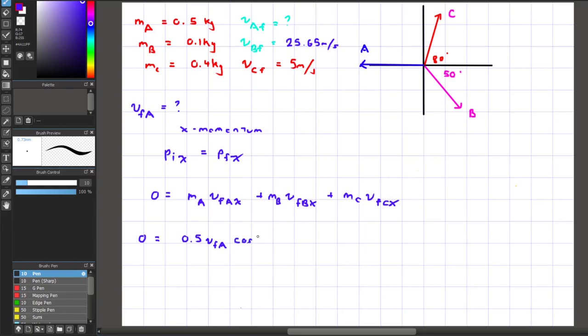For piece A, you can put an angle of 180 degrees to imply the negative direction. We can finish the rest of the final momentum expression, as we have all the known information. Finally, we can solve for the final speed of piece A, and it is 3.99 meters per second.